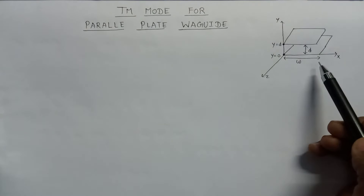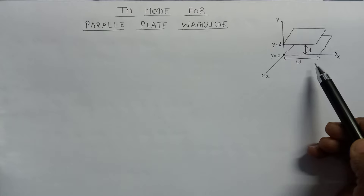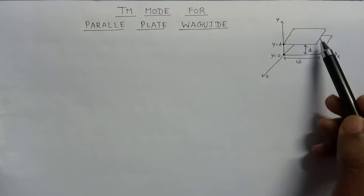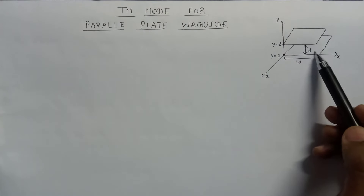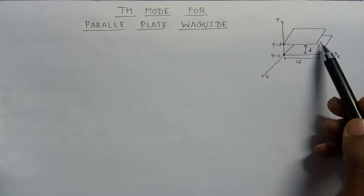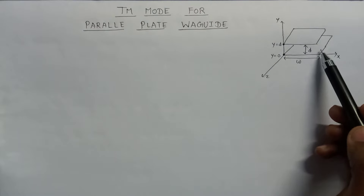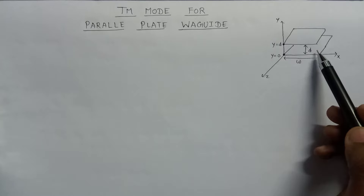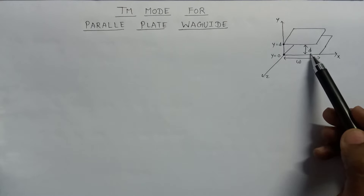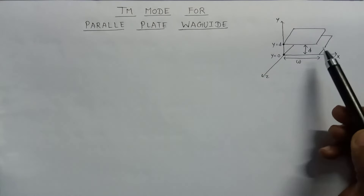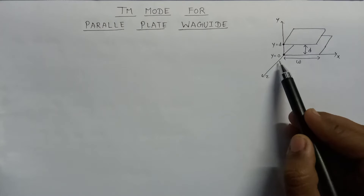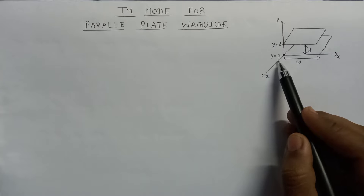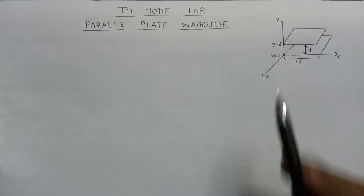This is the structure of the parallel plate waveguide that we discussed in our previous lecture. Here are the two plates — the top plate and bottom plate — which are parallel to each other. In between these two plates, a dielectric material is filled, and these two plates are placed at a distance equal to d. The width of these two parallel plates is equal to w, and these are placed from y equals zero to y equals d.